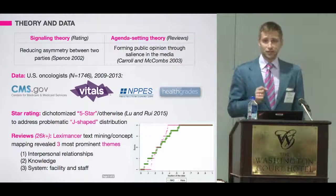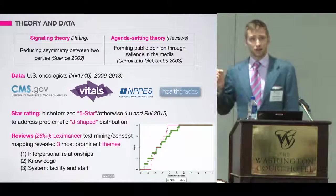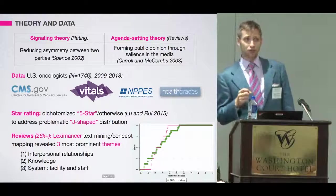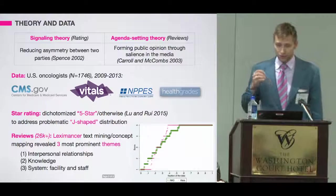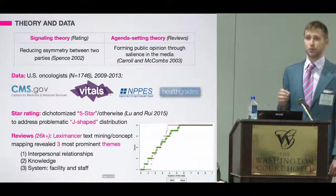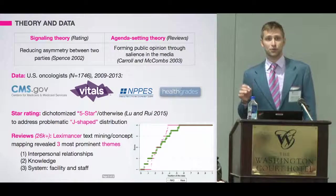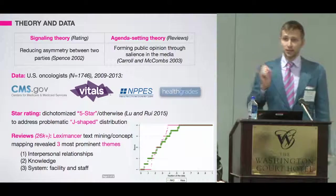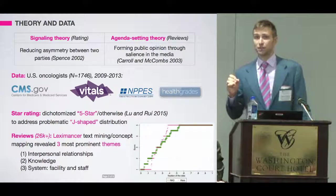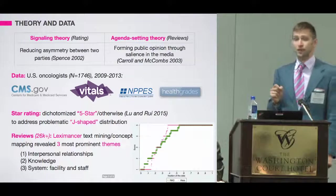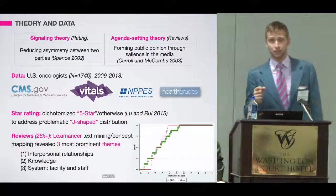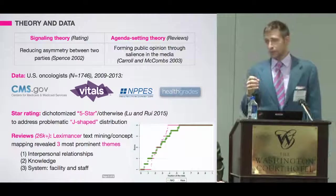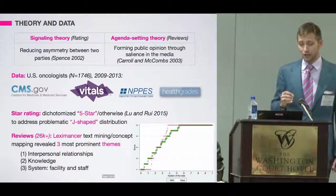Data was collected from CMS, vitals.com, health grades, and national provider registry. The dataset consists of 1,700 oncologists observed from 2009 to 2013. To address the J-shaped distribution in rating scores, we dichotomized the vitals 1-through-5 ratings into binary rating status: 5-star or otherwise. We employed text mining and concept mapping to determine key themes from user reviews — interpersonal manners, knowledge, and facility and staff (combined into system) — and determined sentiment associated with both the themes and the oncologist reviews.